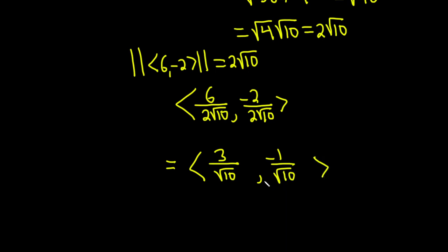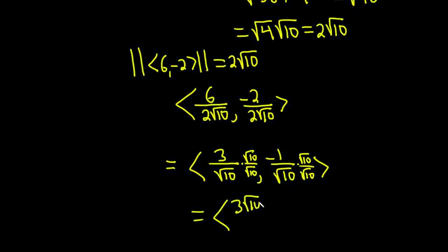A lot of people don't like leaving the answer like this — it's technically correct, but we can do better by rationalizing. To do that, multiply each component by √10 over √10. For the first component: 3 times √10 is 3√10, and √10 times √10 is 10, giving 3√10 over 10. For the second: negative √10 over 10.